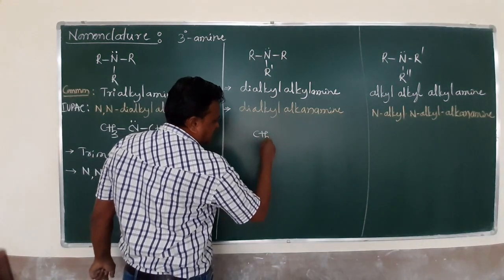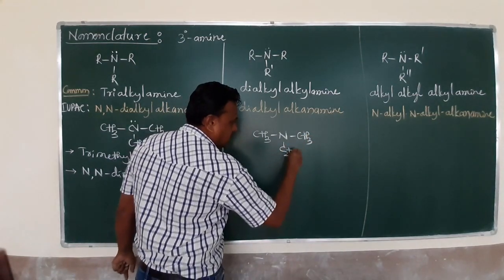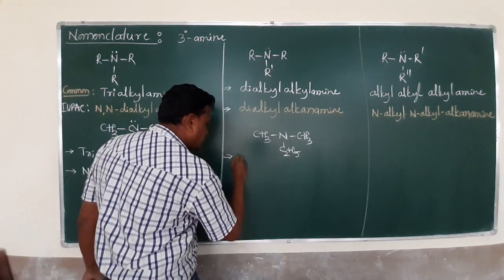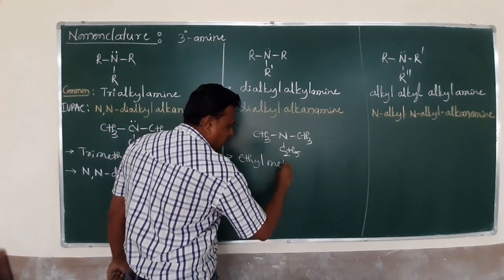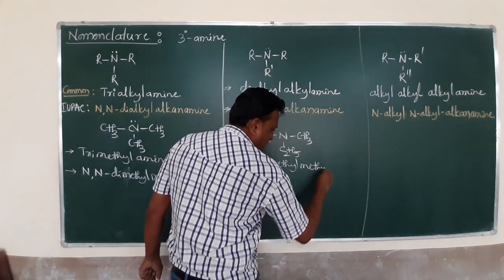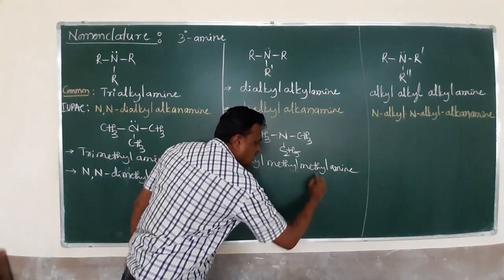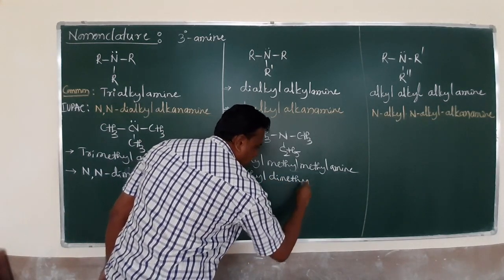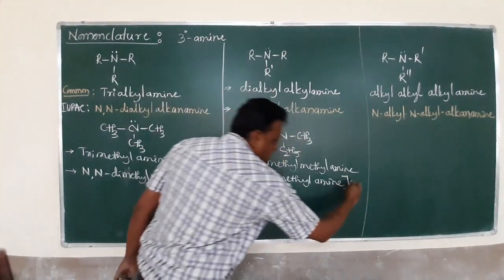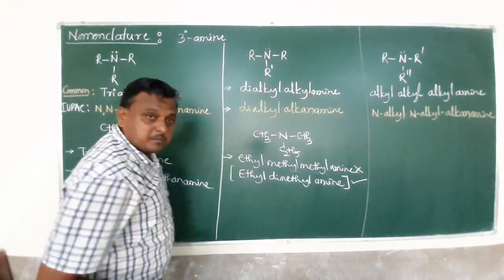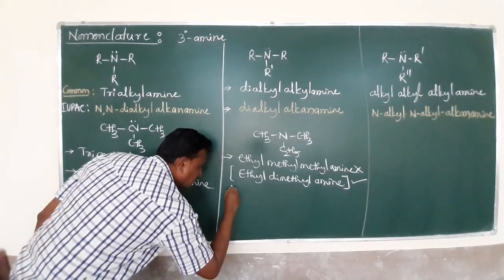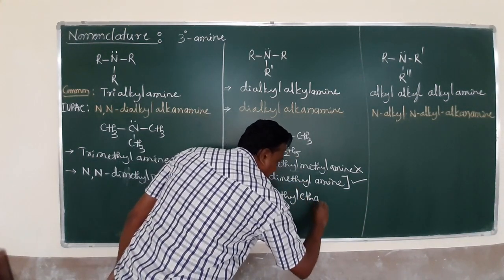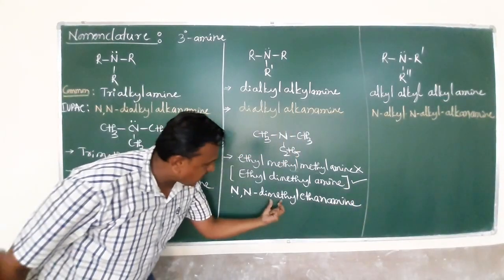Now consider two methyl groups and one ethyl group. The common name is based on alphabetical order: ethyl comes before methyl, so it is ethyl dimethyl amine. For IUPAC, the longest chain is ethyl, so the two methyl groups are the substituents: N,N-dimethylethanamine.